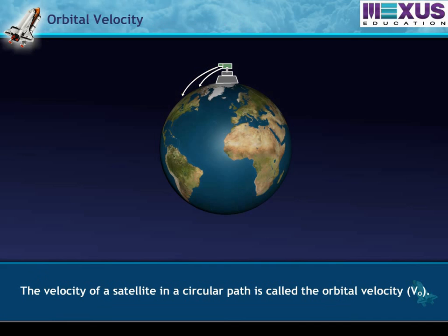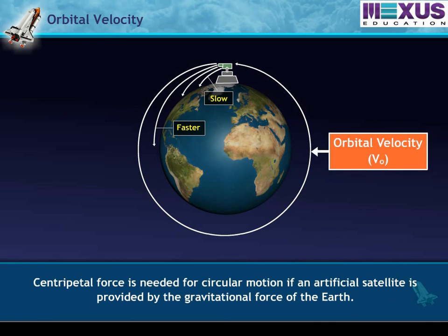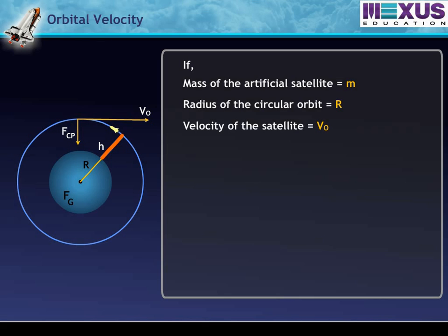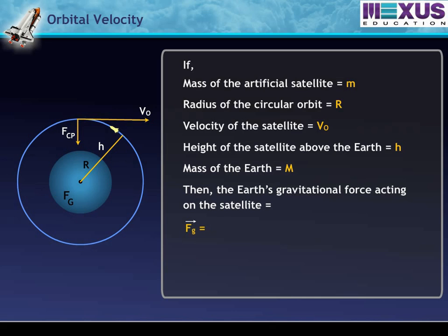The velocity of a satellite in a circular path is called the orbital velocity VO. Centripetal force is needed for circular motion, provided by the gravitational force of the Earth. Consider an artificial satellite of mass m going round in a circular orbit of radius R with velocity VO at a height H from the surface of Earth. Let the mass of the Earth be M. Then the gravitational force FG acting on the satellite equals G times M times m upon (R plus H) squared — equation 1.